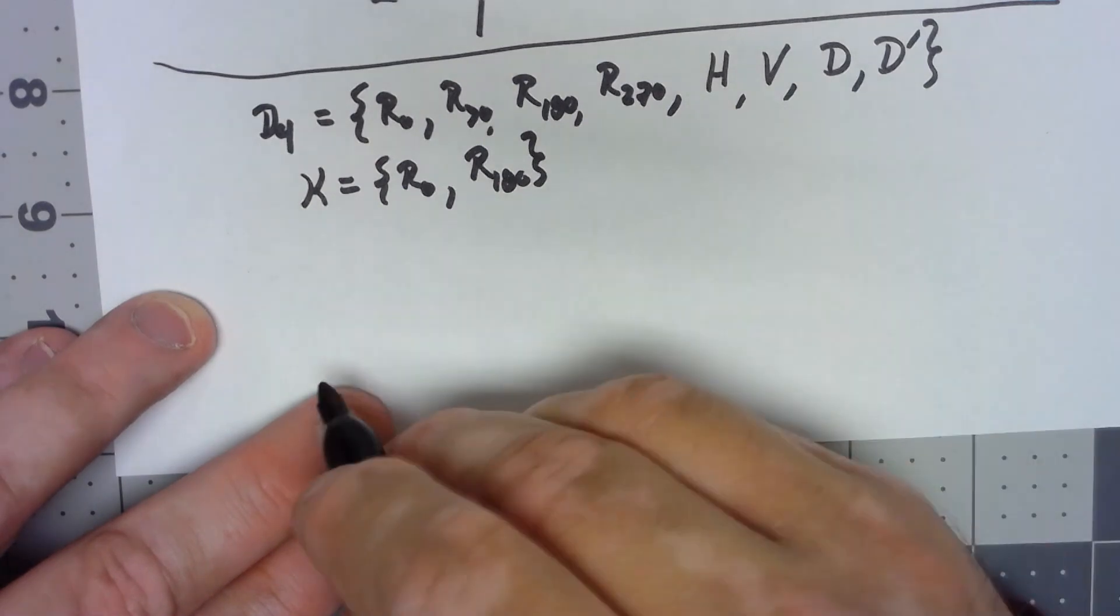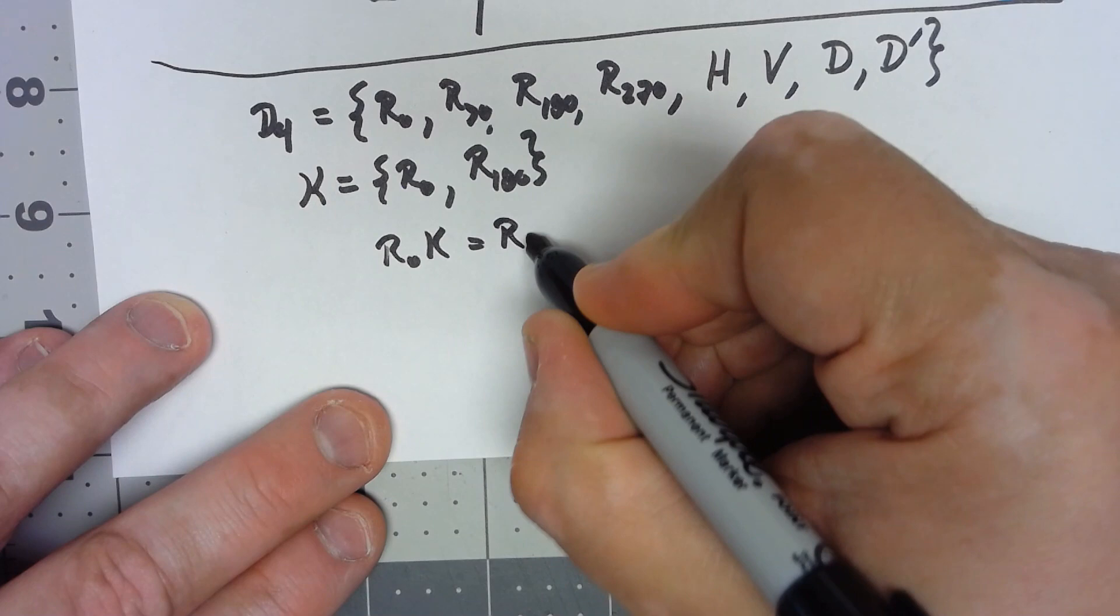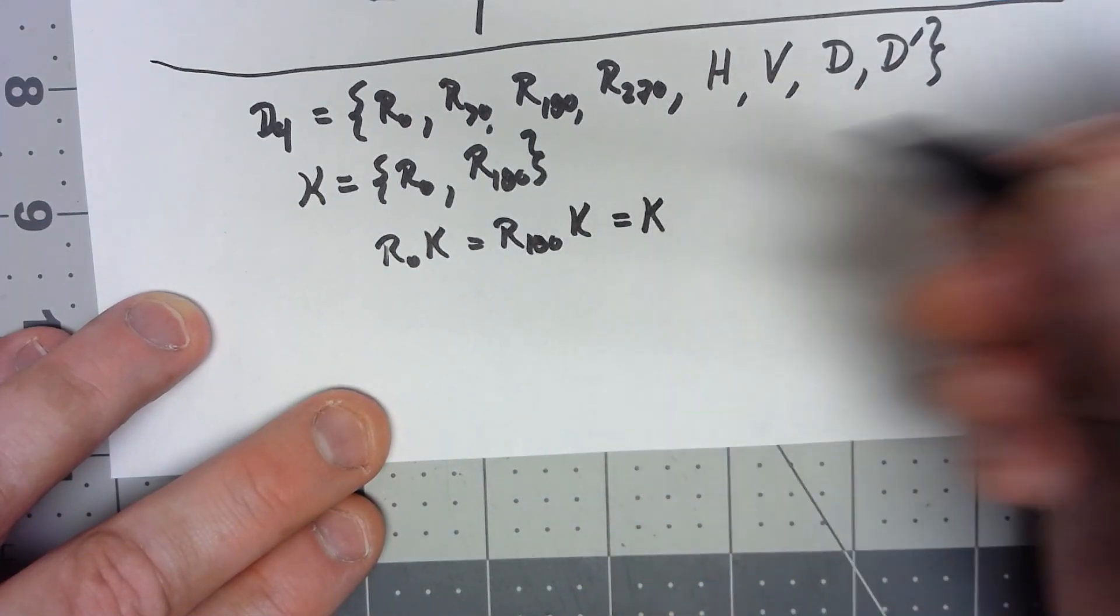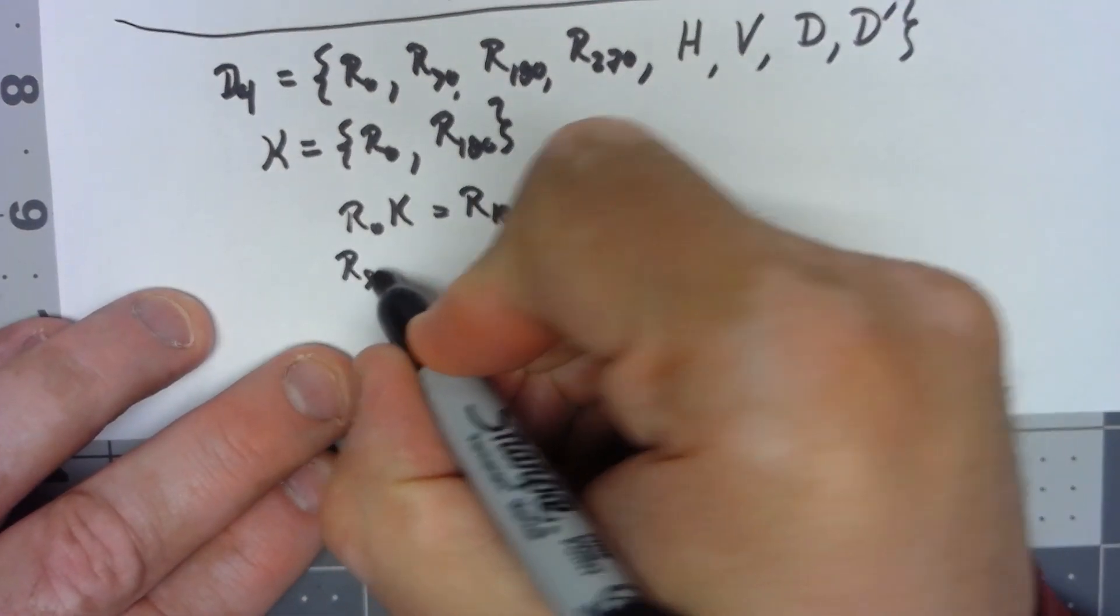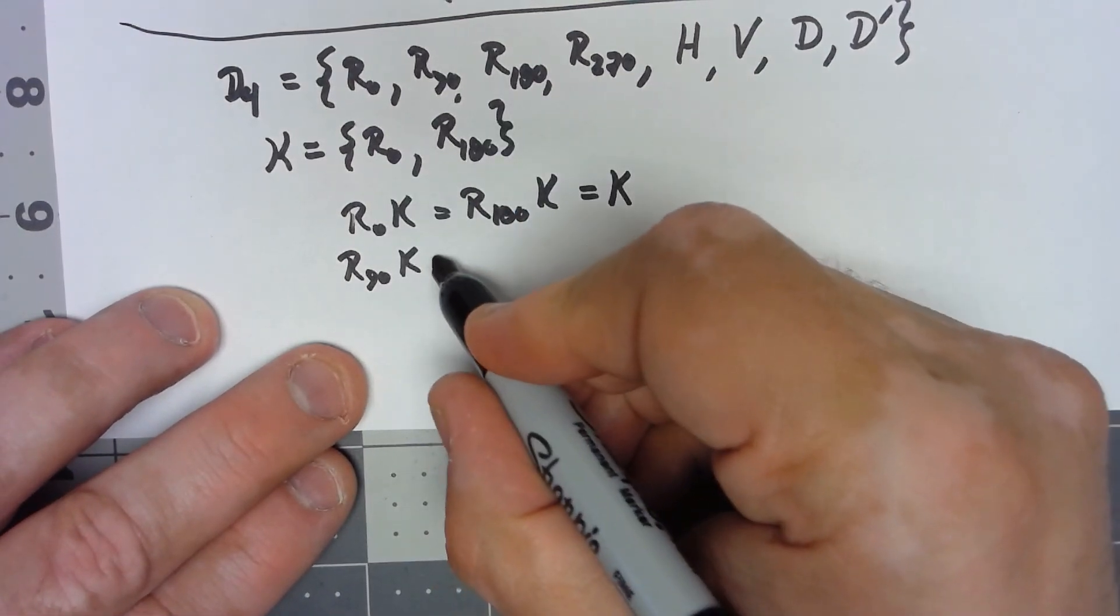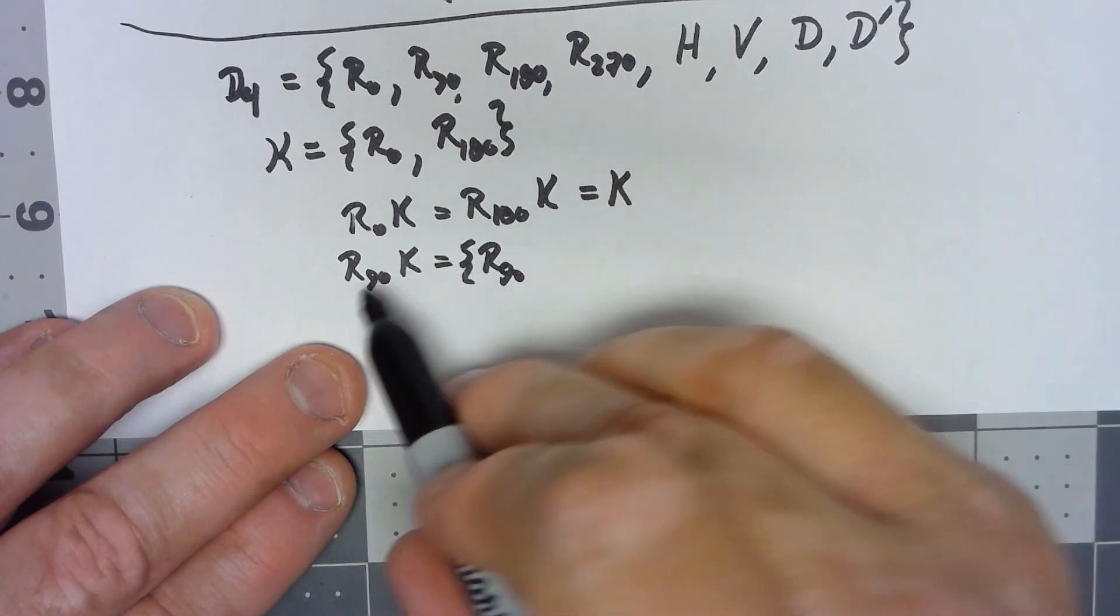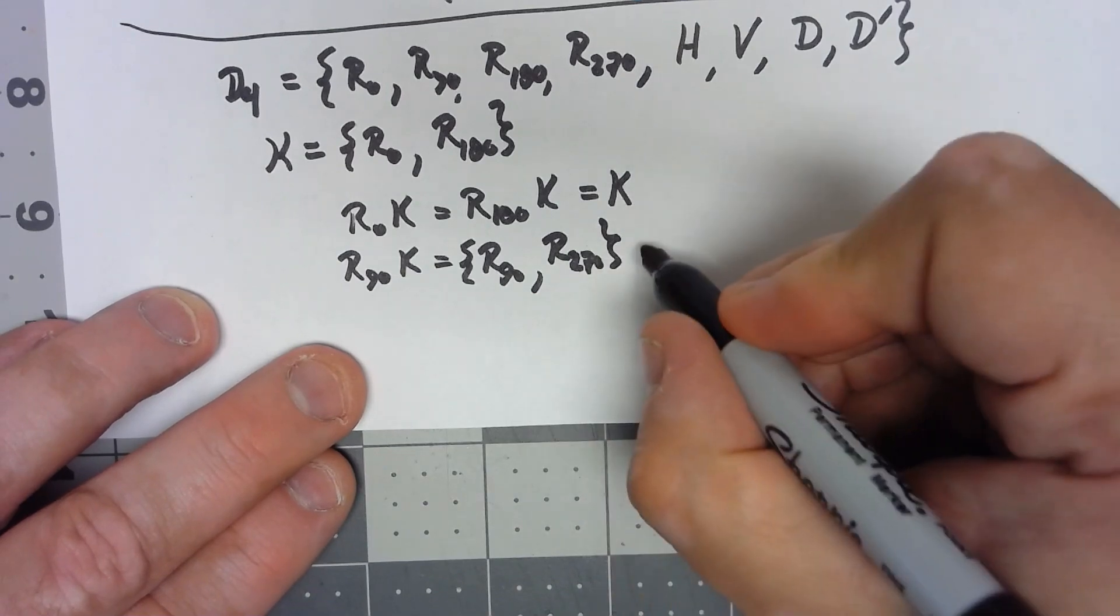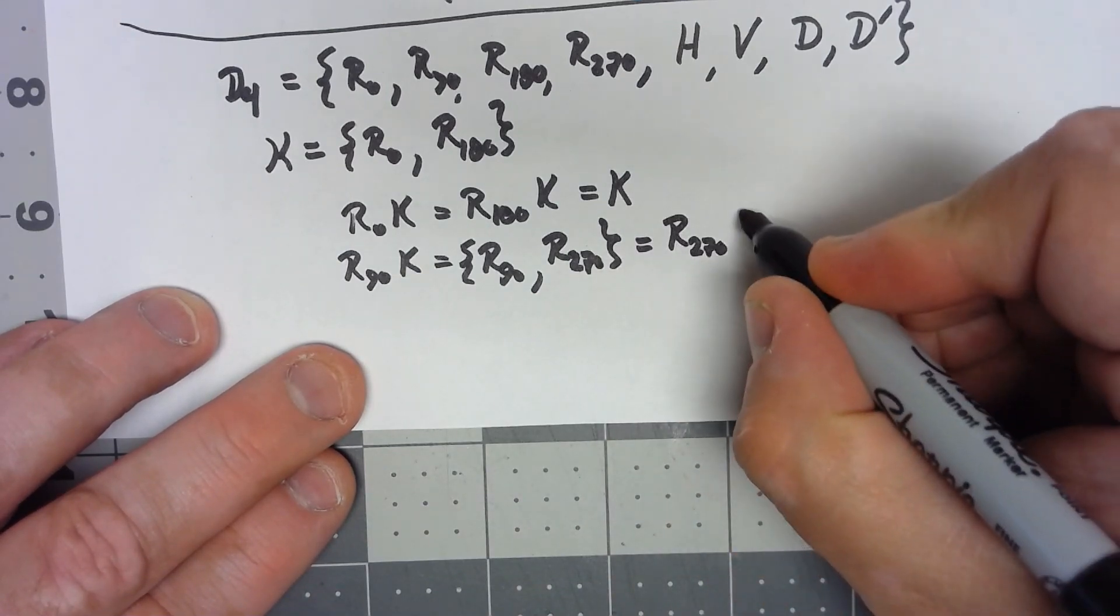Well, certainly R0K and R180K are both going to be just K. If I take R90K, R90 times R0 is R90, R90 times R180 is R270, and that's going to be the same thing as R270 times K.